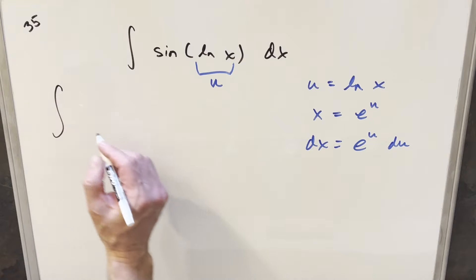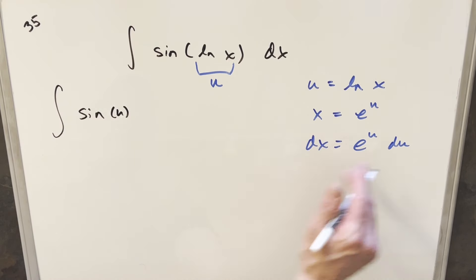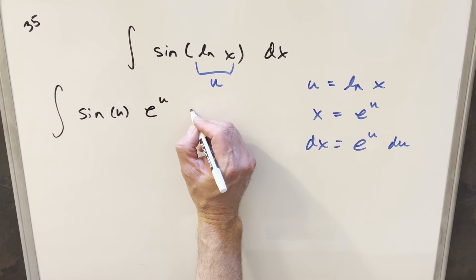Now from here, we'll just go ahead and substitute. This is going to turn into sine of u, and our dx value is e to the u, so this is going to become e to the u du.